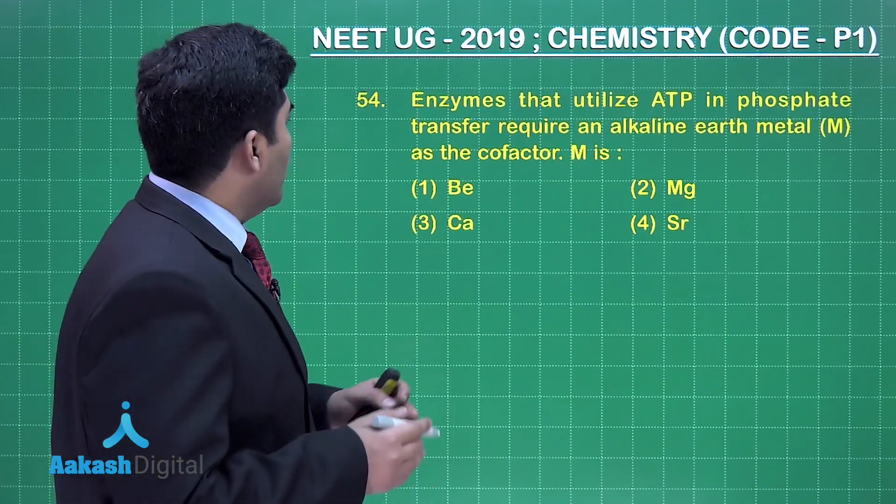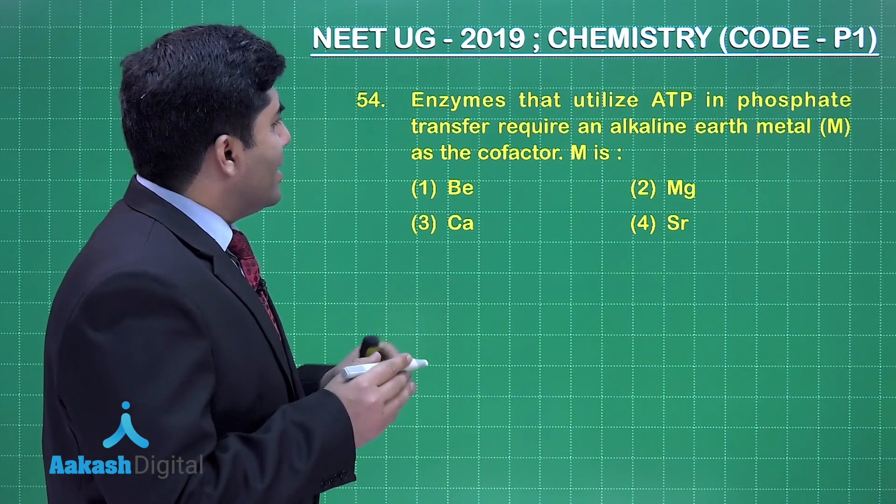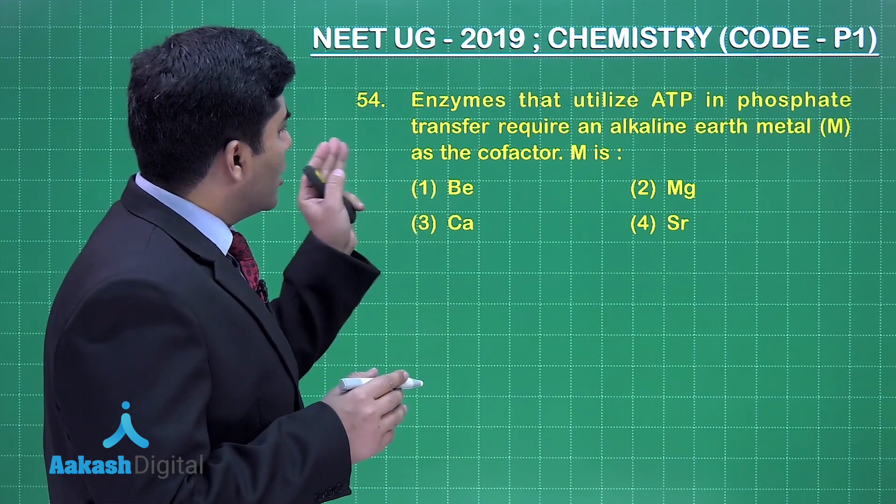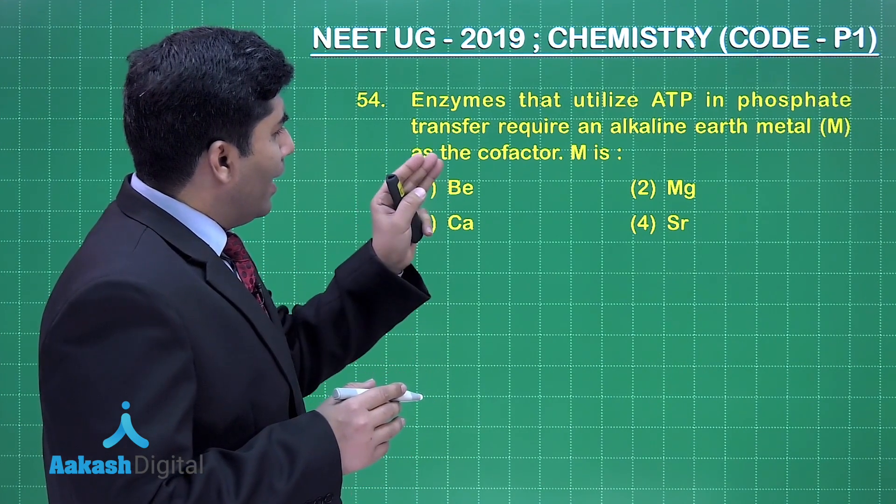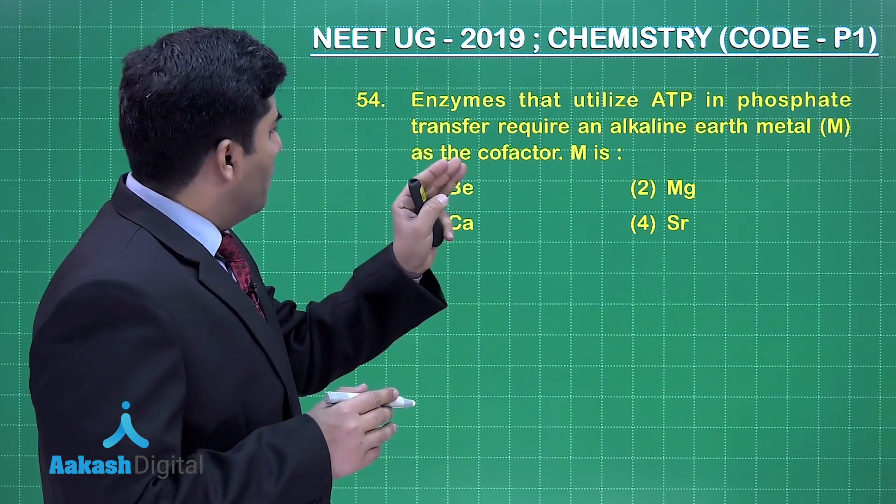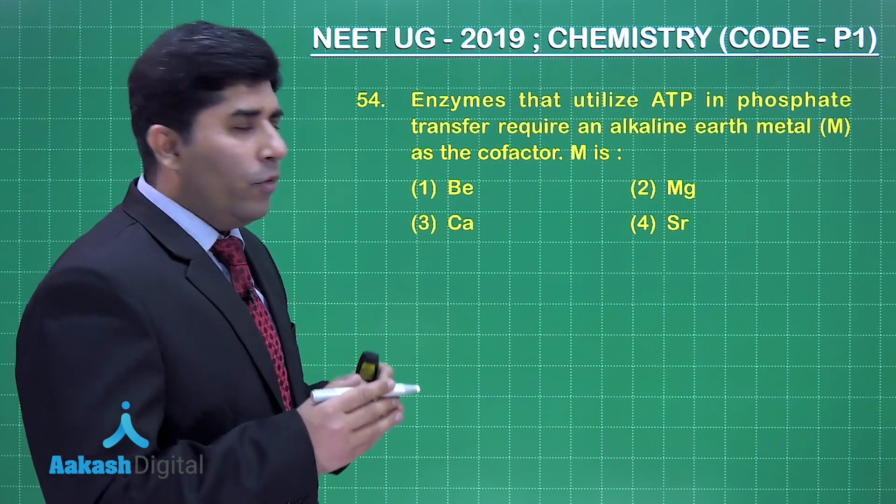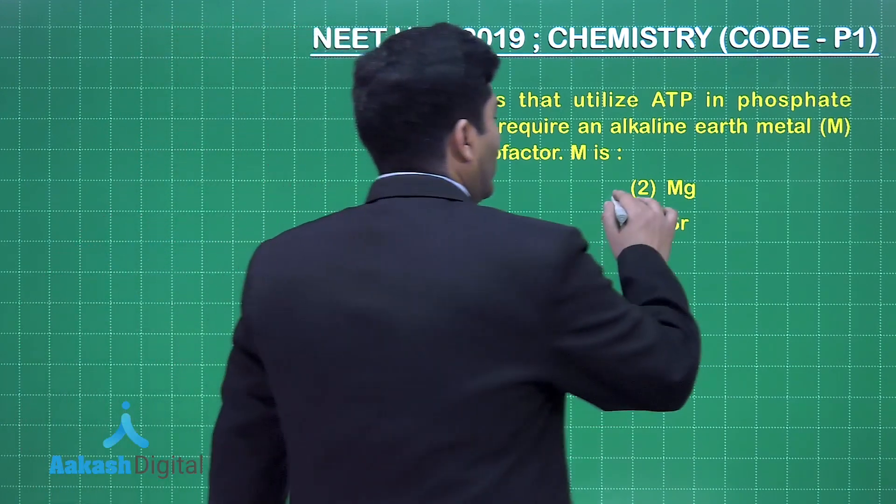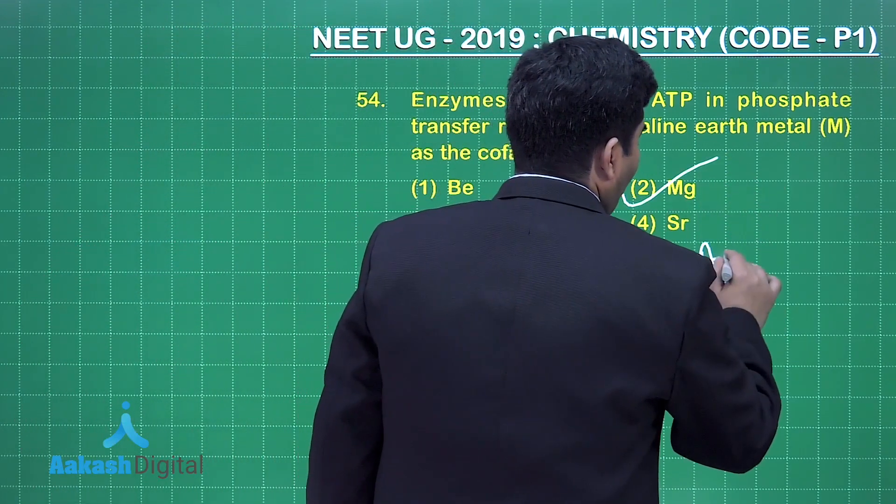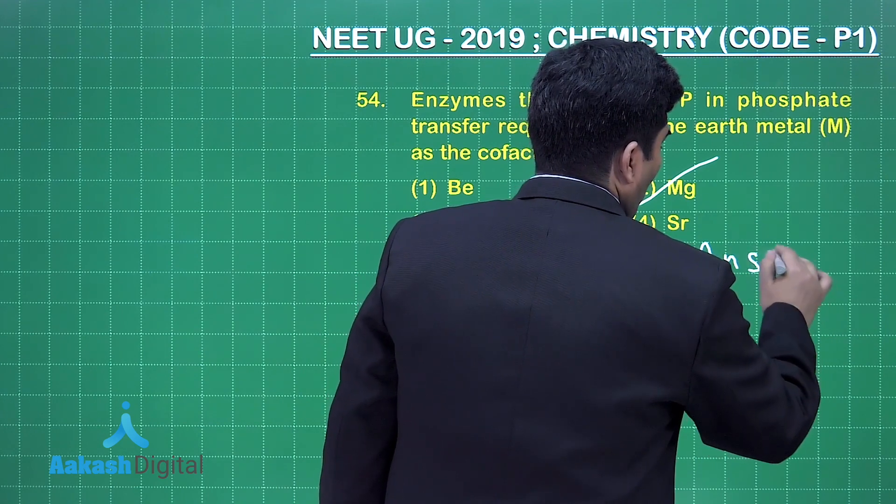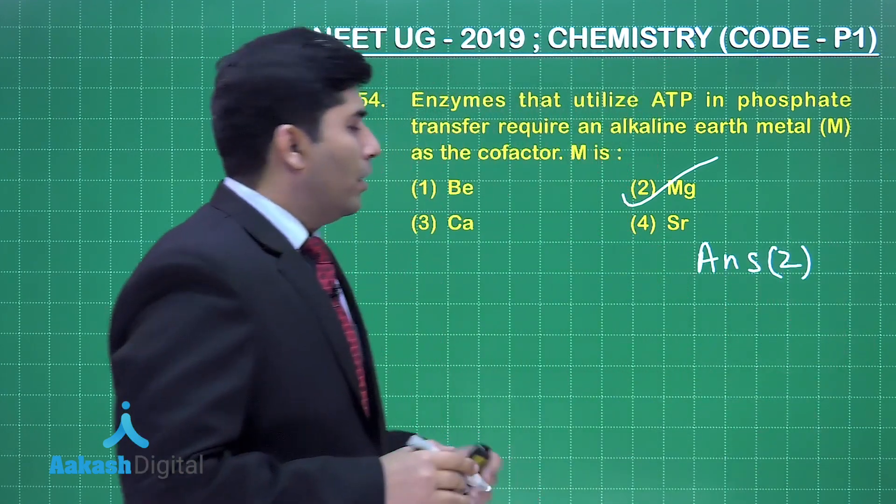Now, the next question. Enzymes that utilize ATP in phosphate transfer require an alkaline earth metal M as the cofactor, and the M is, now we all know that it is magnesium. So the correct answer is option number 2.